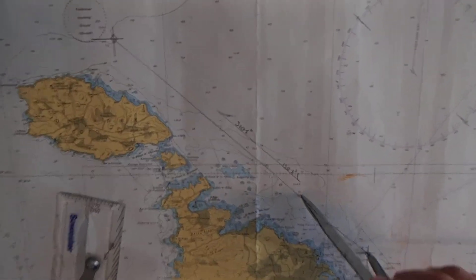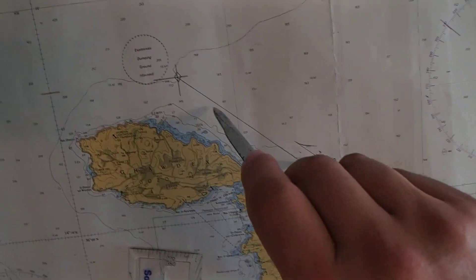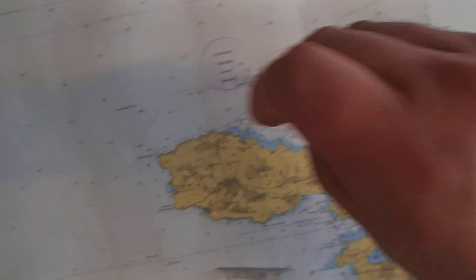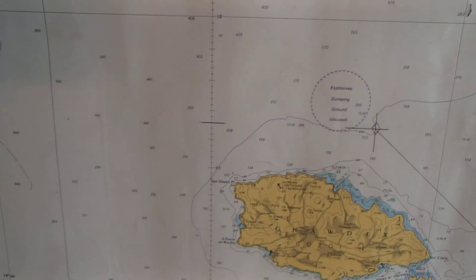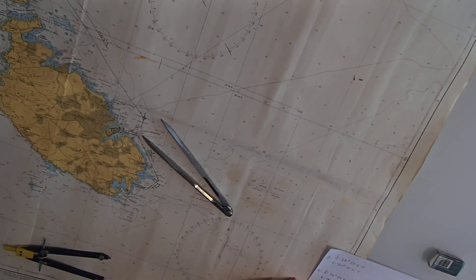Going over here we have that's 5, 10, 15, 15 and 16, 17. So we have a distance of 17 nautical miles.